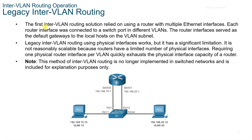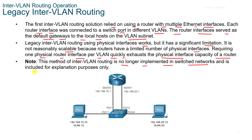Legacy Inter-VLAN Routing was the first routing solution and relied on using a router with multiple Ethernet interfaces. Each router interface was connected to a switch port in different VLANs, and the router interfaces served as the default gateways to the local hosts on a VLAN subnet. It does have significant limitations — it's not scalable because routers have a limited number of physical interfaces, requiring one physical router interface per VLAN, which quickly exhausts the physical interface capacity of any router.